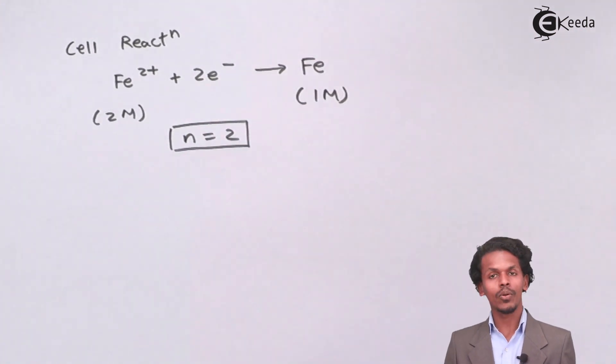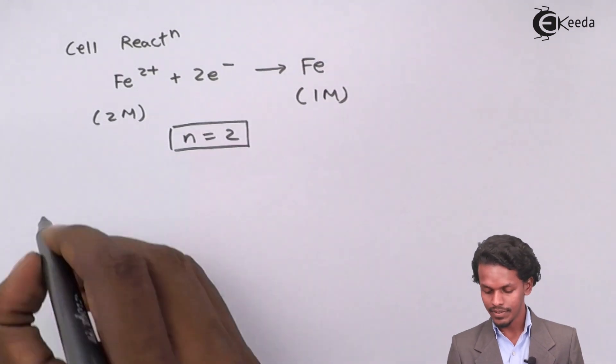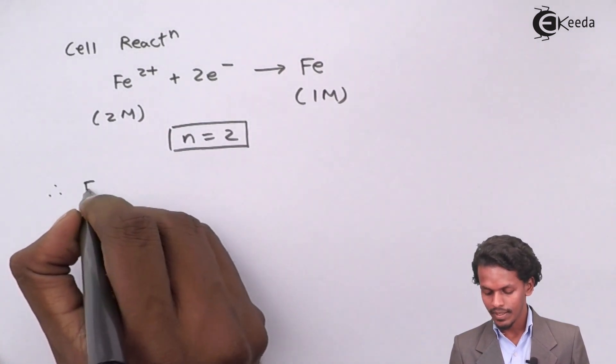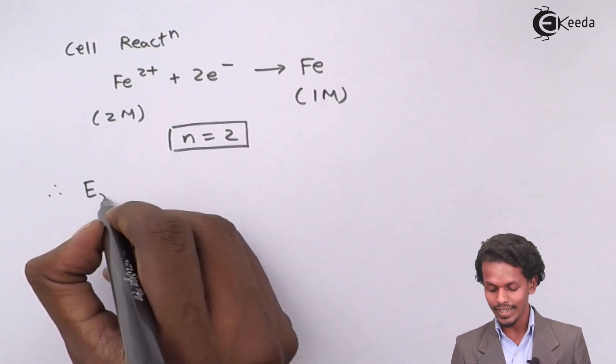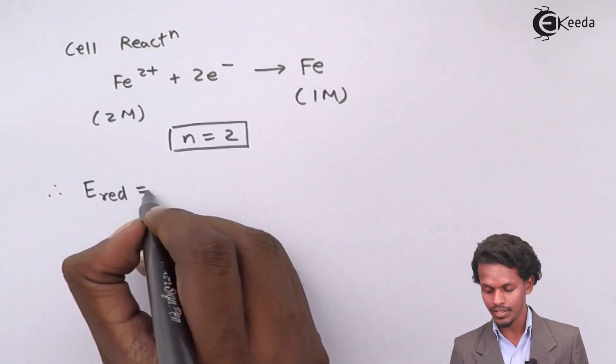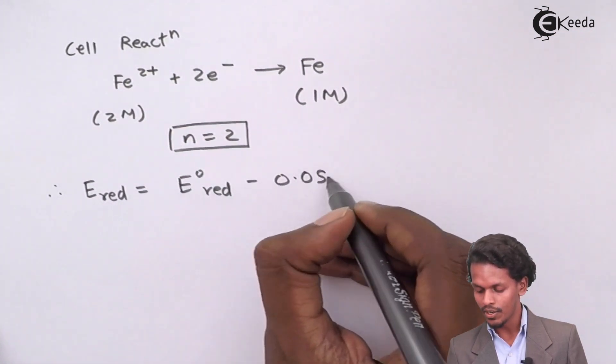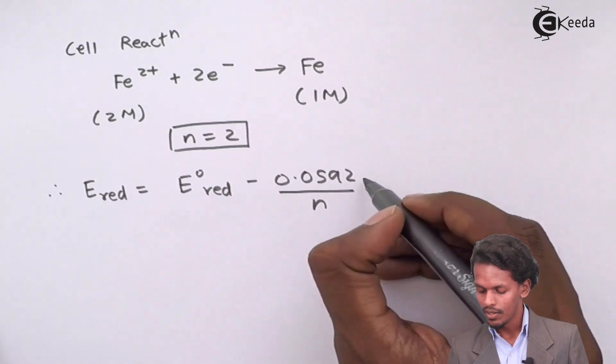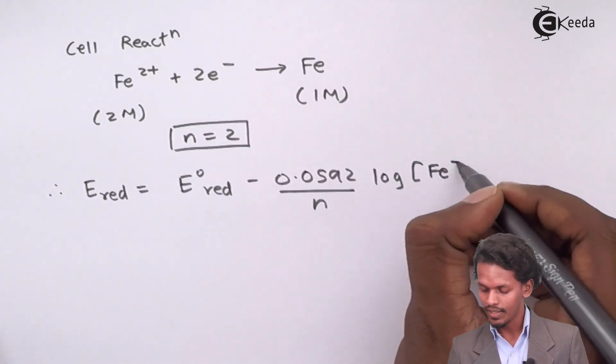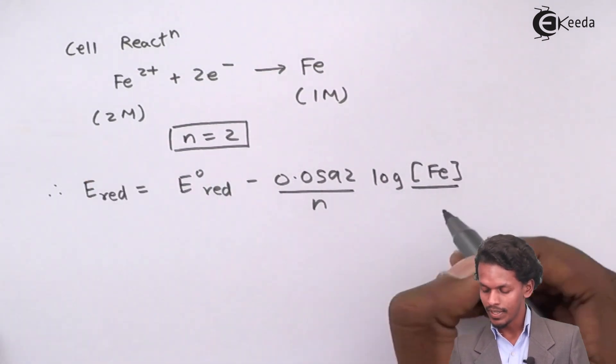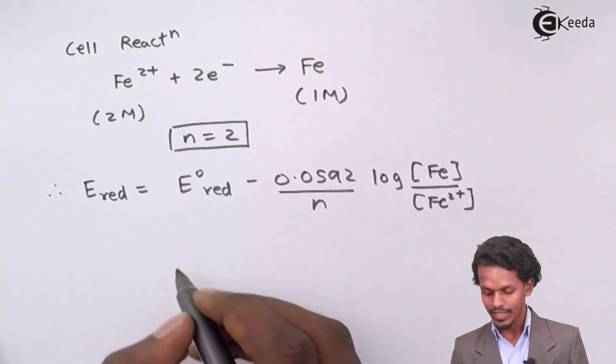It is very much easier to calculate the cell reduction potential. We know that E cell or E reduction equals E0 reduction minus 0.0592 divided by N log of the concentration of product, in this case Fe, divided by the concentration of reactant that is Fe2+.